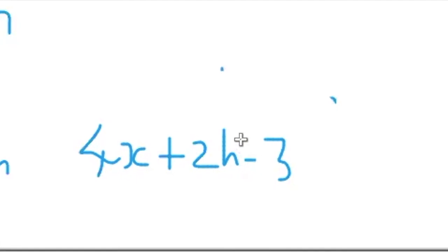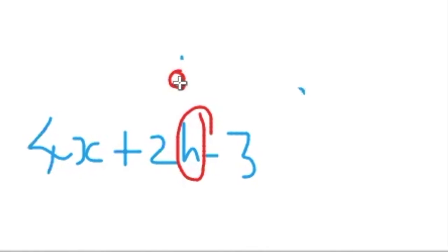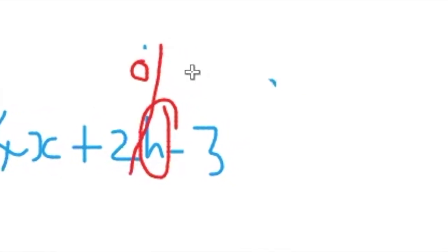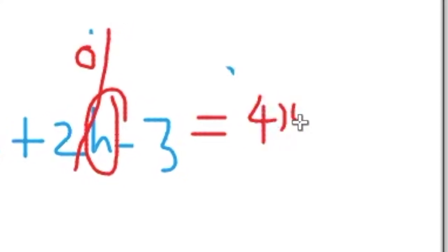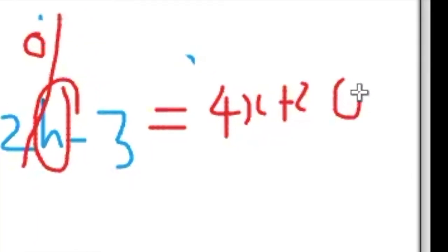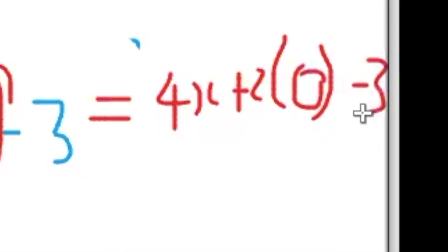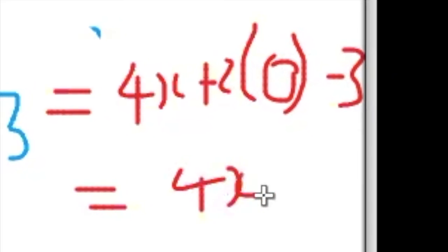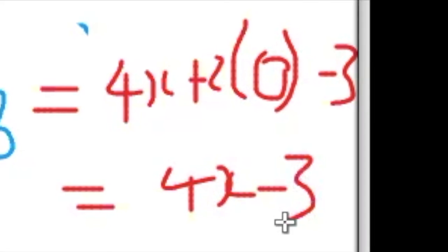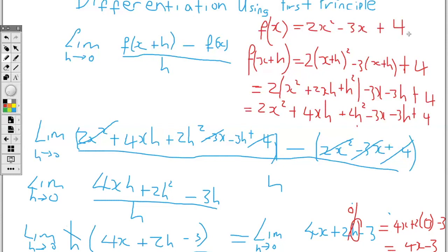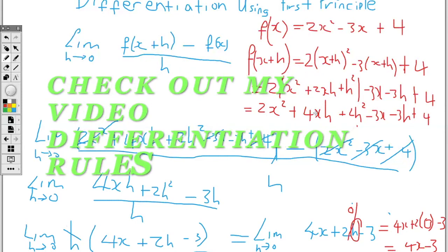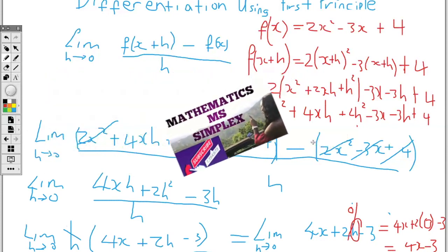Now we replace h with 0. So we have 4x plus 2 times 0 take away 3, and the 2h term disappears. Our answer is 4x minus 3. We can test this by differentiating the original: 2 times 2 gives 4, so we have 4x; the derivative of x is 1, and 1 times negative 3 is negative 3; and the derivative of a constant is 0. So the answer is confirmed correct. If you forget how to differentiate using the rules, I have a video on differentiating using the rules.